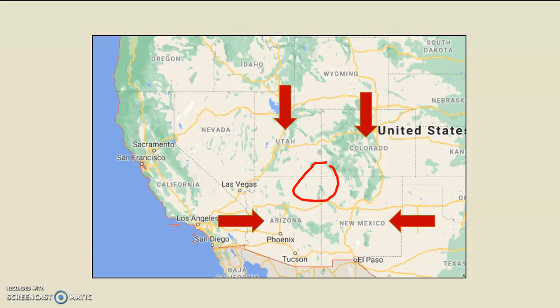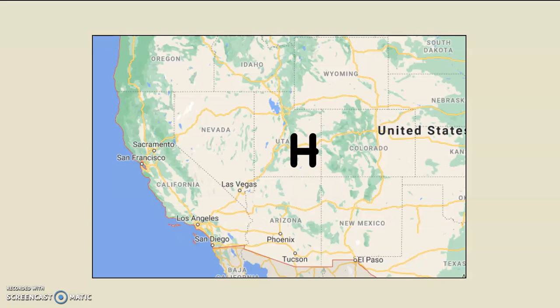You can see the maroon arrows indicating Arizona, New Mexico, Colorado, and Utah. I've placed a big high-pressure system right over the top of those four corner states. Remember, in the northern hemisphere, the air circulates clockwise and outwards around a high-pressure system.